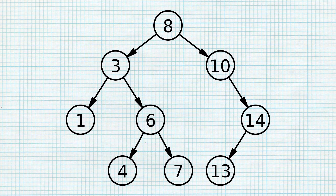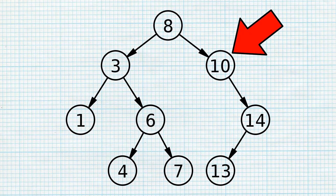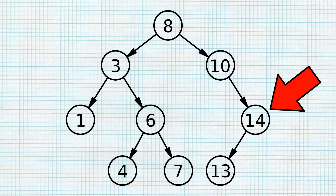It is the ordering of data that distinguishes binary search trees from other types of binary trees. In binary search trees, the smaller of the two child nodes is placed to the left of the parent node and the larger is placed to the right. This forms a structure where the smallest node values are found on the leftmost side and the largest on the rightmost side.